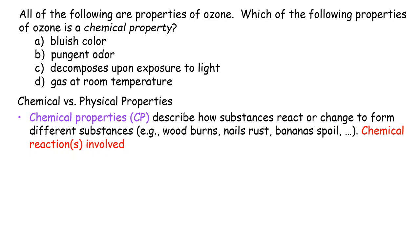First, chemical properties describe how substances react or change to form different substances. In other words, there must be chemical reactions involved. For example, wood or paper burns — that's an oxidation reaction. Iron nails rust — that's also a chemical reaction. Bananas spoil — that's decomposition of bananas. The key concept here is that chemical reactions are involved.